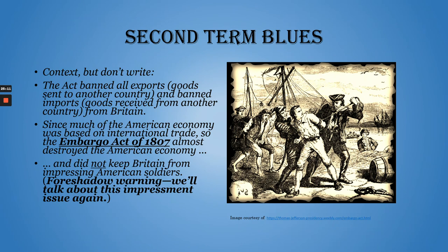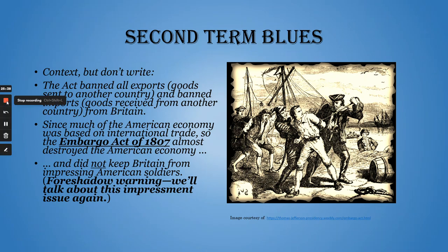Since federal courts now have this power of judicial review, this gives more and more power to the federal government. So we see Jefferson, who always said we shouldn't strengthen the federal government and all powers should be in the states — two very big things happened in his presidency that, in fact, strengthened the federal government. Next time we'll talk about James Madison's presidency and the War of 1812.